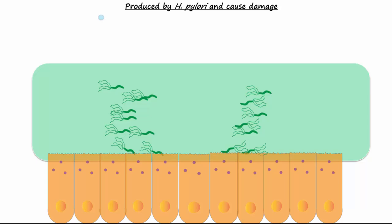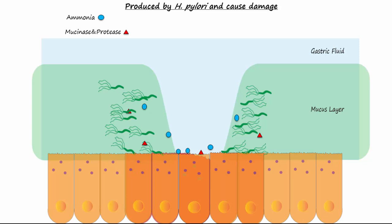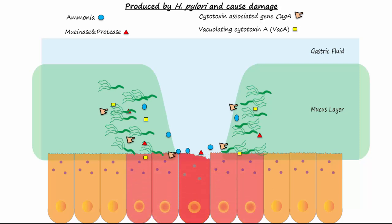Several substances are produced by H. pylori that cause damage to the gastric epithelial lining and lead to ulcers. Ammonia, mucinase, and protease are toxic to epithelial cells. Vacuolating cytotoxin A, or VacA, disrupts tight junctions and causes apoptosis. Cytotoxin associated gene, or CagA, is a carcinogen and causes inflammation. Altogether, these toxic substances damage and kill epithelial cells, causing a crater and bleeding ulcer.